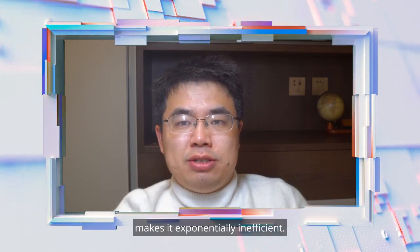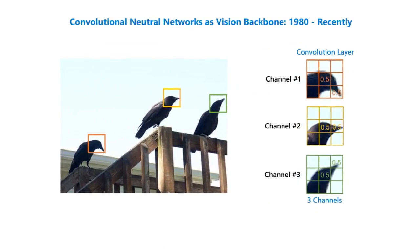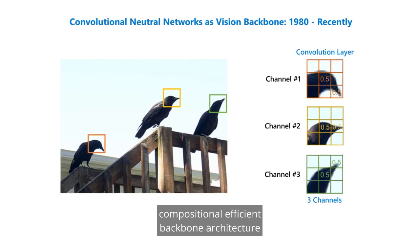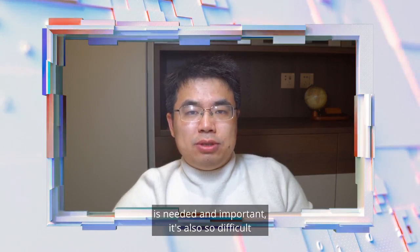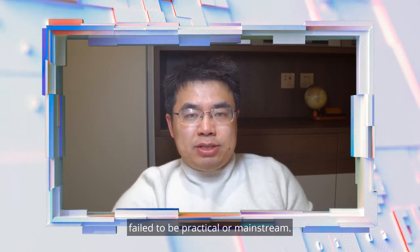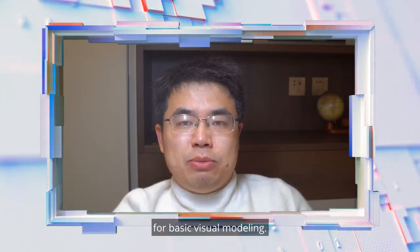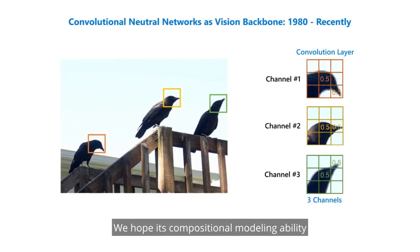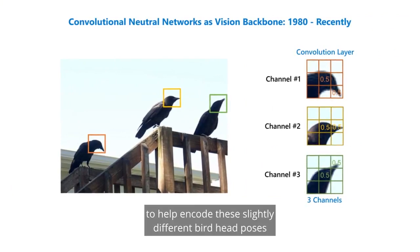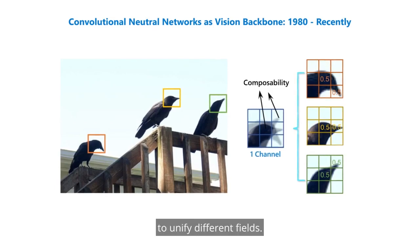But its template matching nature makes it exponentially inefficient. For example, we need three channels to encode three slightly different head poses. While developing a computationally efficient backbone architecture is needed and important, it is also so difficult that all previous attempts failed to be practical or mainstream. We have known that Transformer and its building block of attention is better for basic visual modeling. We hope its compositional modeling ability can help encode slightly different head poses with only one channel.